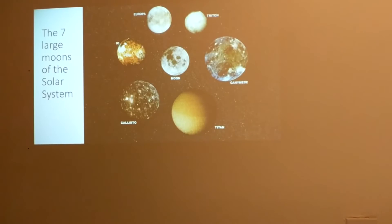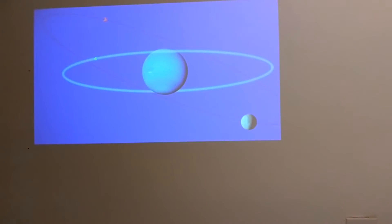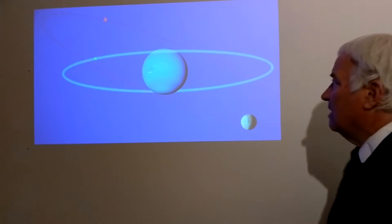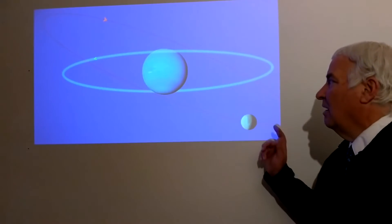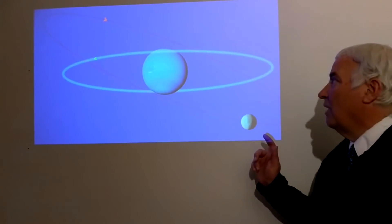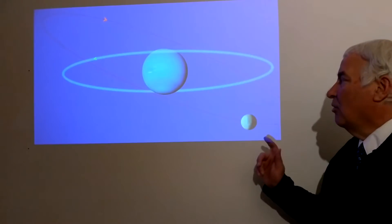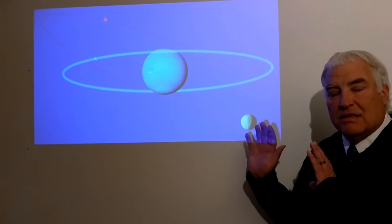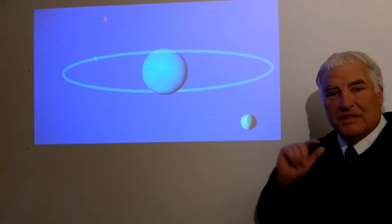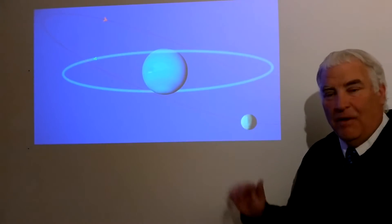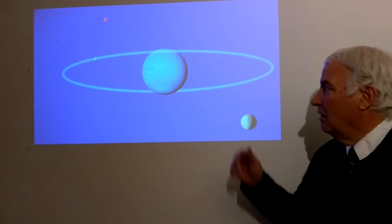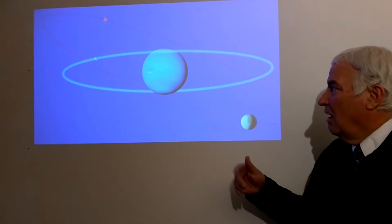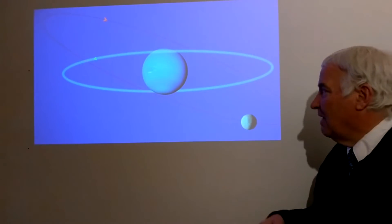Triton orbits the most distant planet in the solar system, Neptune. One thing that is unique among the large moons is that Triton is orbiting in the wrong direction, or the retrograde direction. In other words, all planets orbit the Sun in the same direction following the right-hand rule. The planets also spin in that same direction. The moon Triton orbits in the opposite direction.